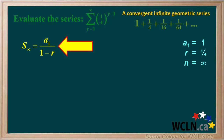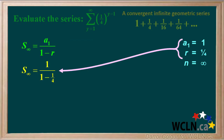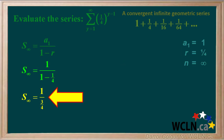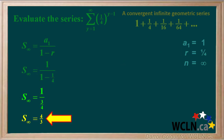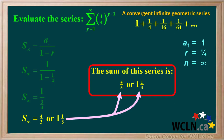We use the equation S infinity equals a1 over 1 minus r to find the sum of a convergent infinite geometric series. We put in 1 for a1 and 1 quarter for r. 1 minus 1 quarter is equal to 3 quarters, and 1 divided by 3 quarters is 4 thirds, or 1 and 1 third. So the sum of this series is 4 thirds, or 1 and 1 third.